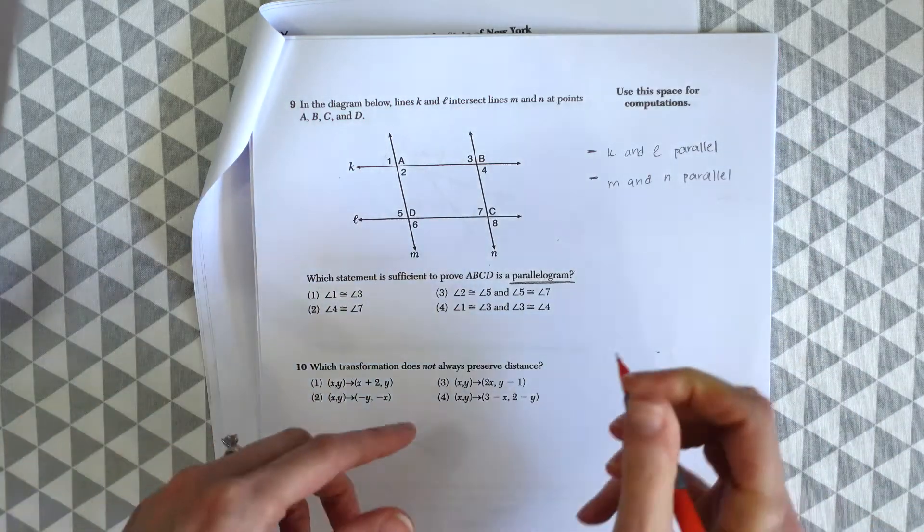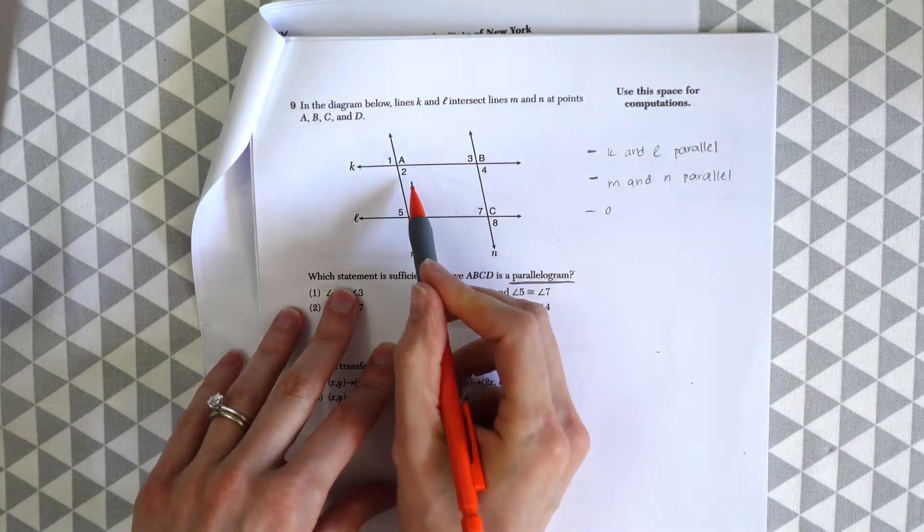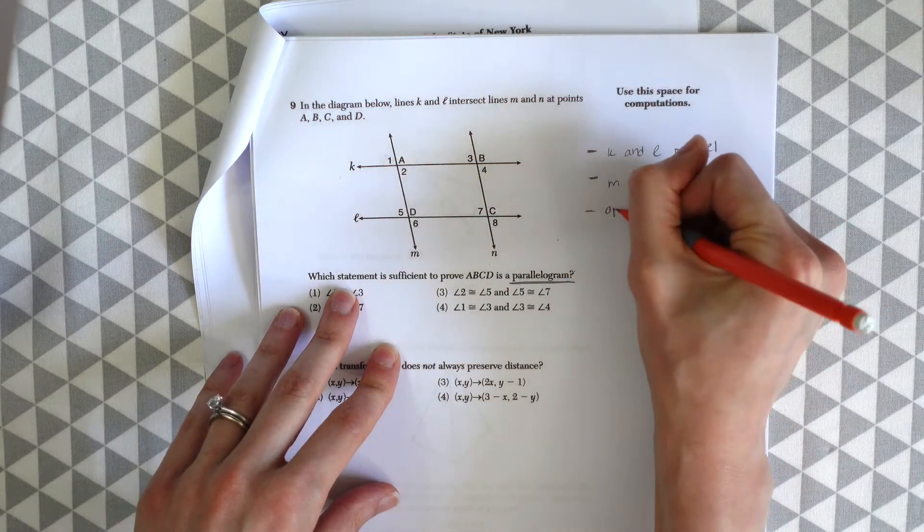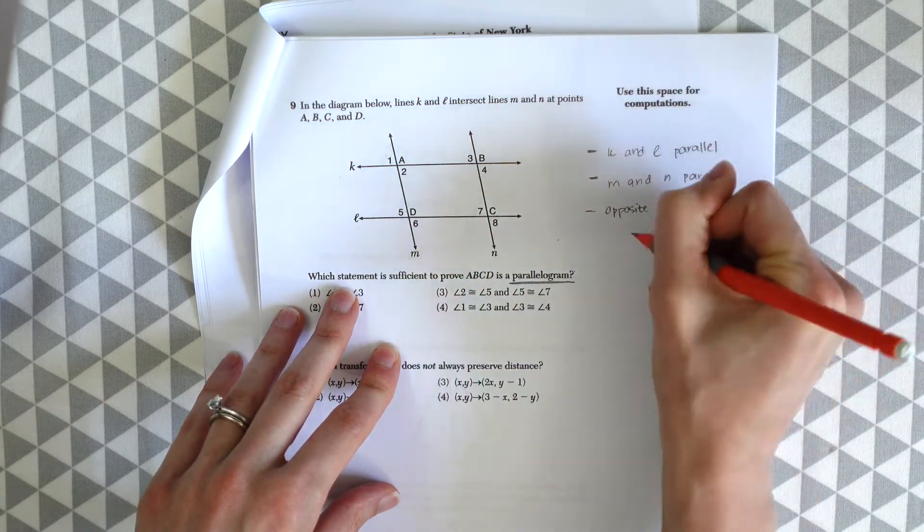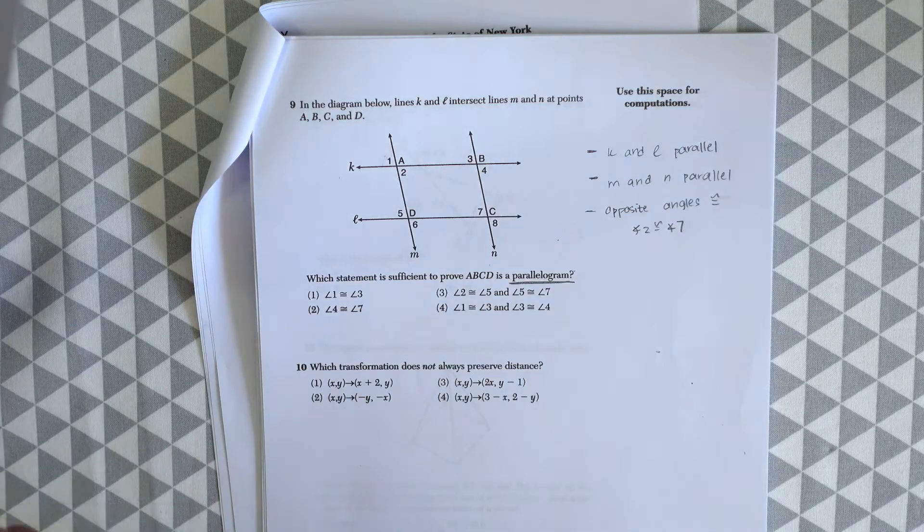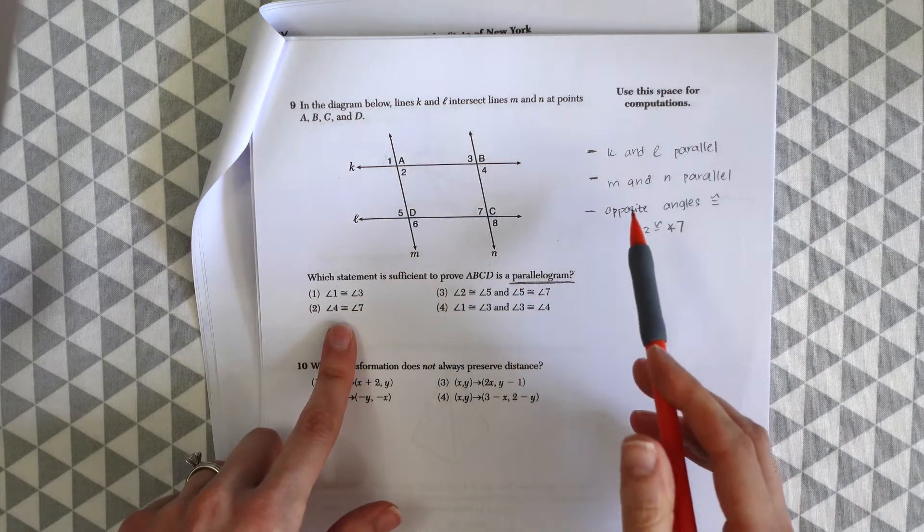Another thing about parallelograms is that the opposite angles are congruent. So that means we'd want angles two and seven to be congruent. So now let's go through each choice and see which would prove all the things on our checklist.